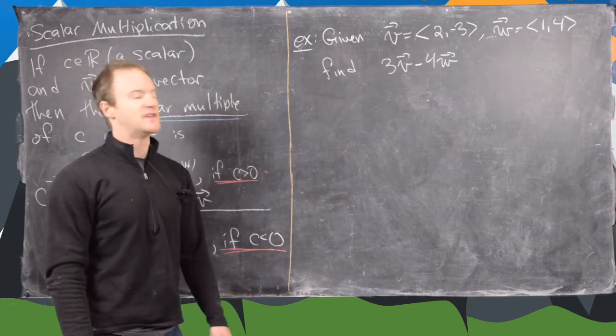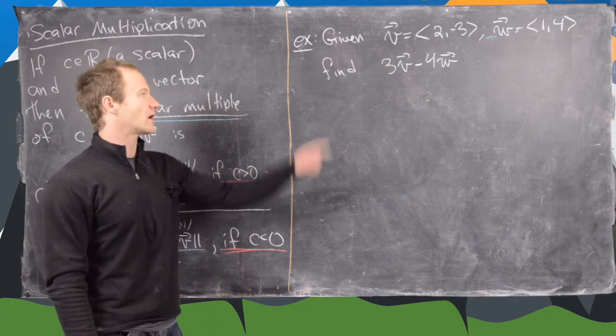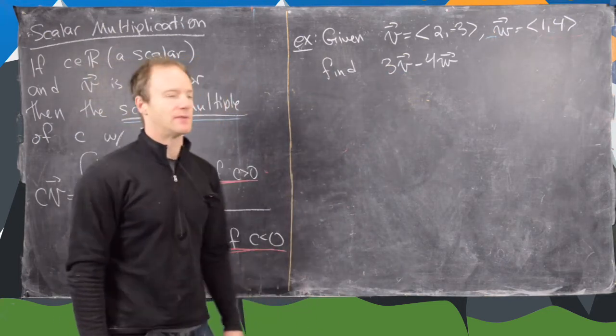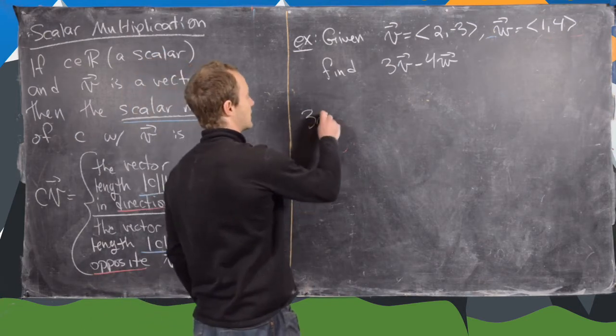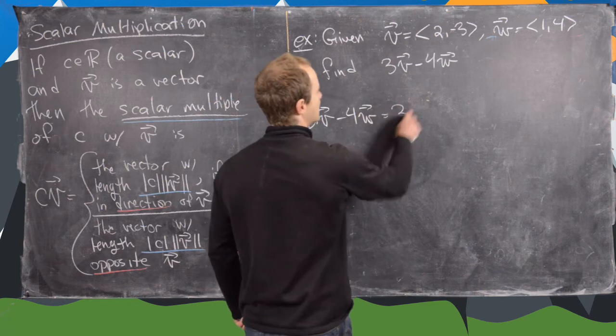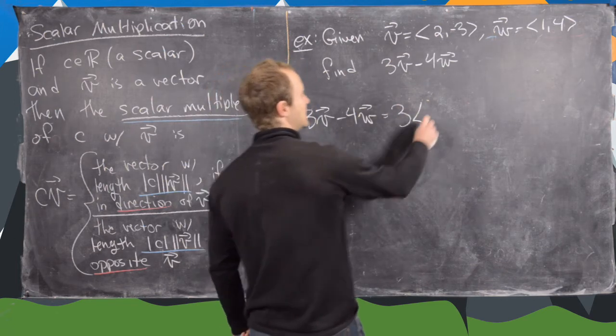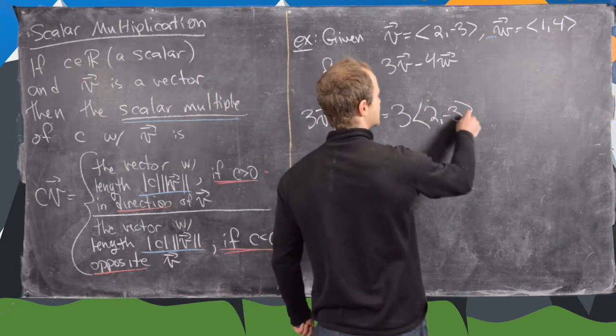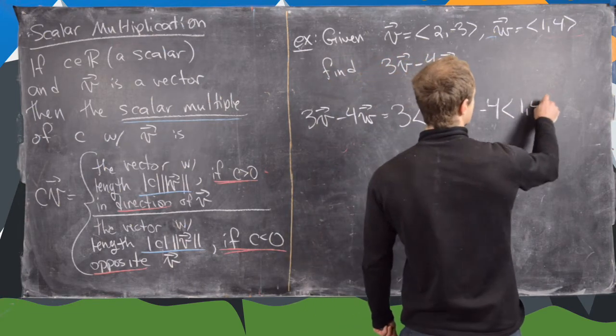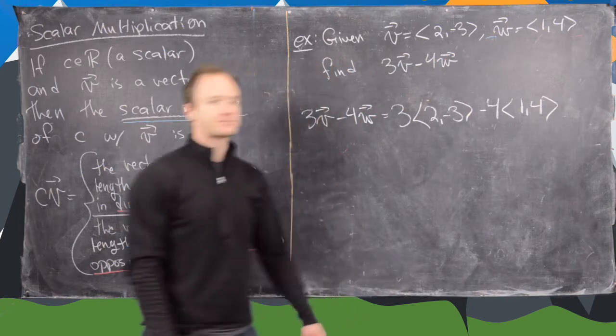So let's look at this example. Let's say we have v equals (2, -3), w equals (1, 4). And we want to find 3 times v minus 4 times w. So let's go ahead and calculate that. So 3v minus 4w. So that's going to be 3, and now let's write down what v is. So that's (2, -3) minus 4, and we can write down what w is. So that's (1, 4).